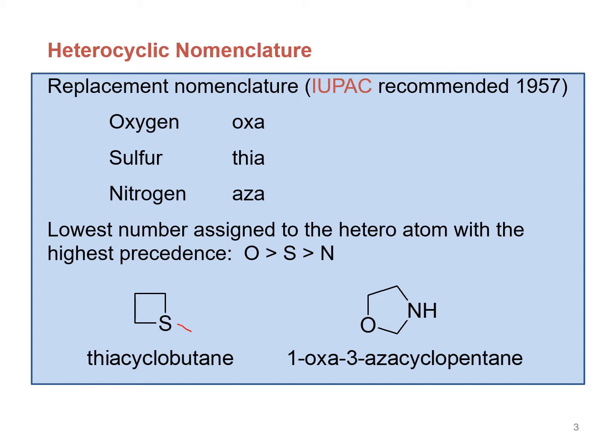For numbering the positions in a heterocyclic compound, we have to start from the hetero atom. In this case we start numbering from sulfur. However, for this particular compound we don't need to number the positions because it doesn't have any substituent.